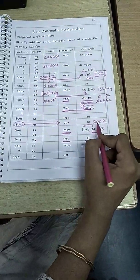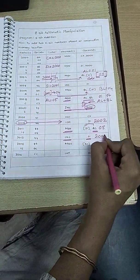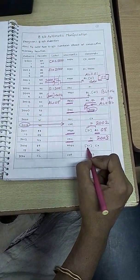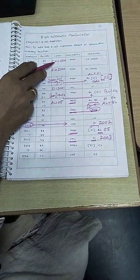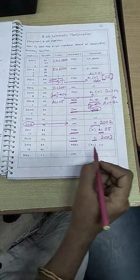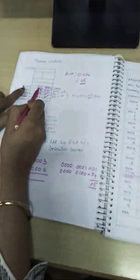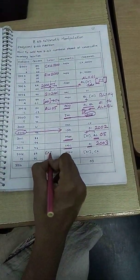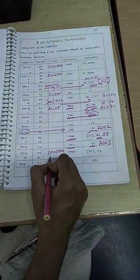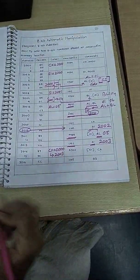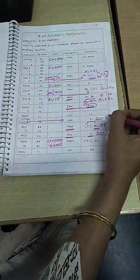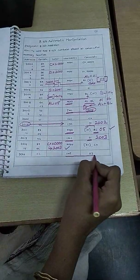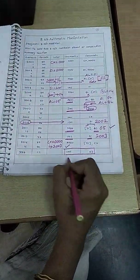SI becomes 2003 after incrementing. We then move the value of CX to the memory location pointed by SI. CX is all zeros, so 0000 will be moved to memory location 2003 as the carry value. The sum is now stored and the carry is stored. The final instruction, interrupt 03, stops the program and exits.